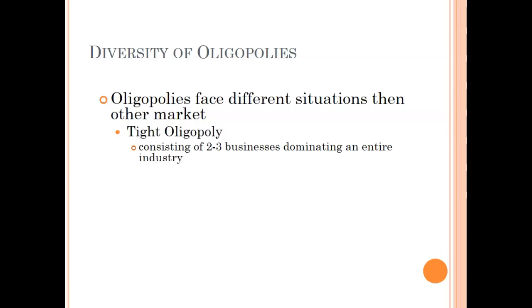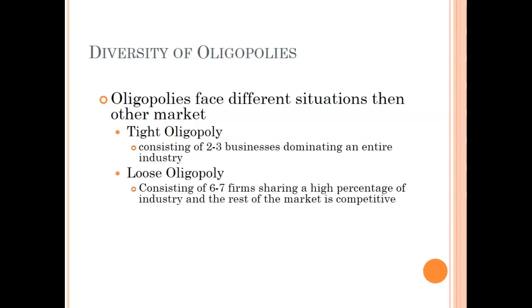So first off, why are there these different models? Well, again, oligopolies face different situations. There's the tight oligopoly where there's two or three businesses and they really dominate the entire industry. Or there's the loose oligopoly, six to seven or somewhere around the range, where each one has a high percentage. And so they still meet that concentration ratio of 40% or more. But there are definitely some other heavy hitters in there. So it's not all centralized to only about two or three firms.